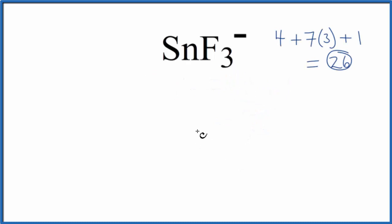We'll put the tin at the center of our Lewis structure. That's the least electronegative. Then we'll put the fluorine atoms around it. Next, we're going to put electrons between atoms. This will form the chemical bond.